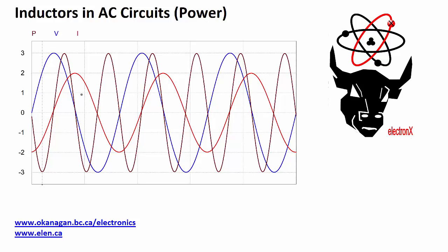This graph that we will look at closer shows the voltage across the inductor in blue, the current through the inductor in red, and then the power that goes into and out of the inductor in this brownish red. You can see that the power is centered around zero.